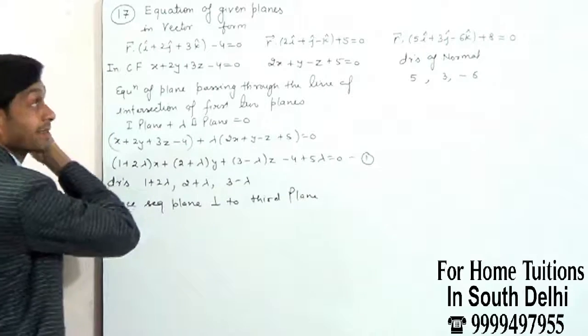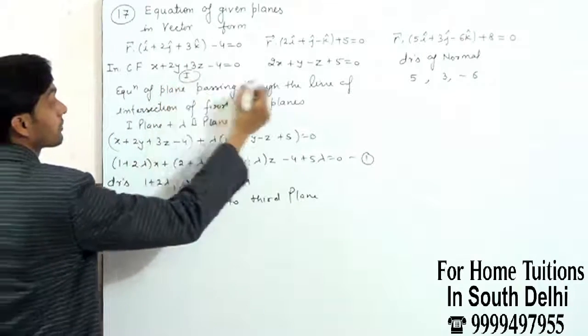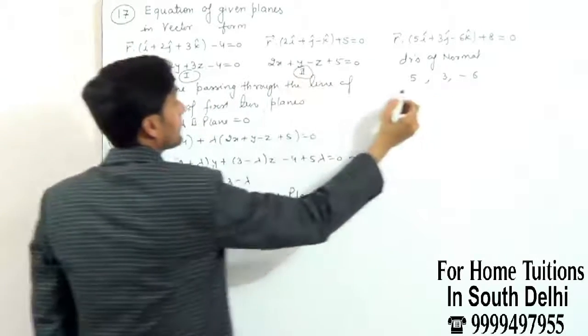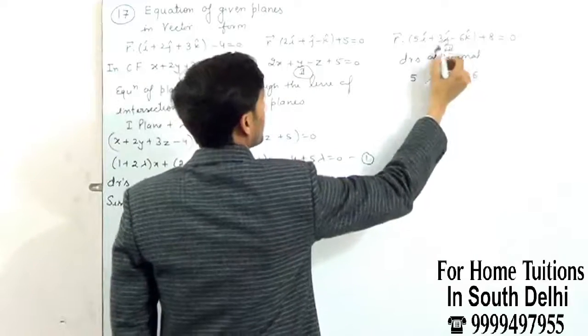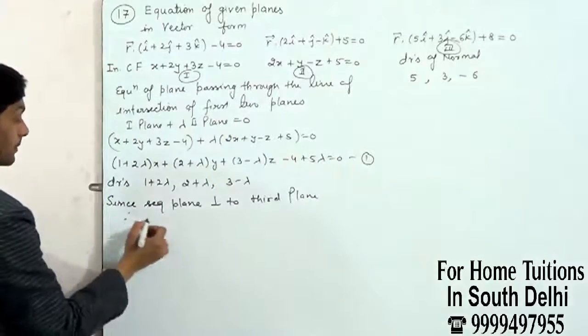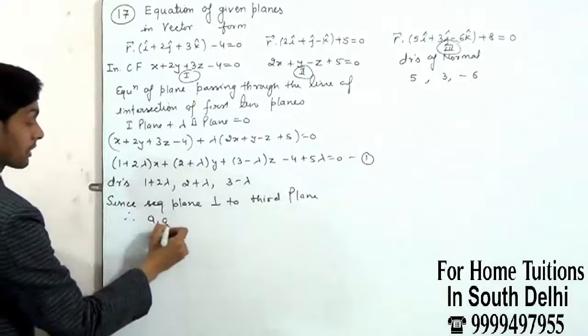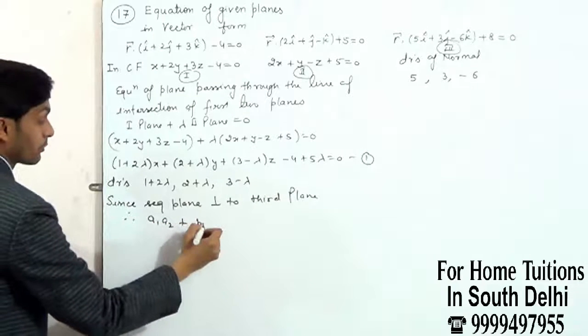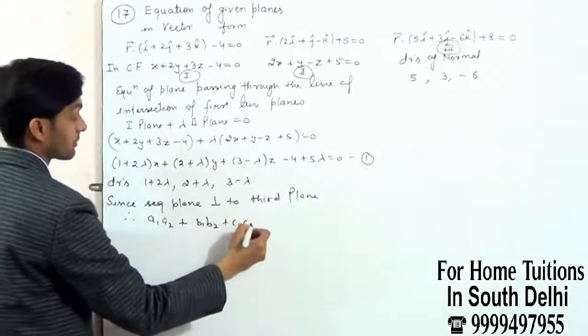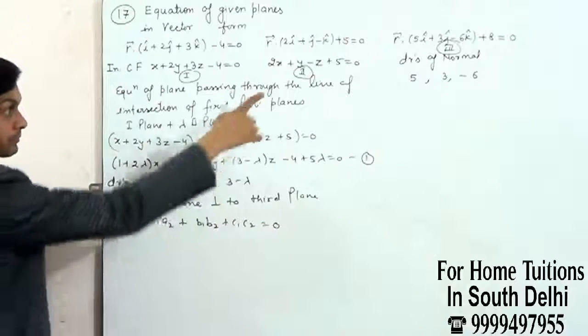the condition is A1·A2 plus B1·B2 plus C1·C2 equals 0.